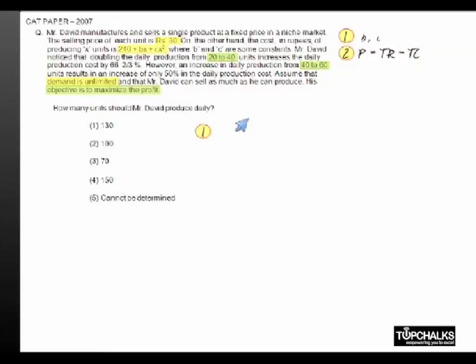The first condition says when the number of objects produced goes from 20 to 40, the total cost has gone up by 66⅔ percent. From this we can write the equation 240 + 20B + 400C = 3/5(240 + 40B + 1600C). Simplifying this, we get the first equation as B + 140C = 24.